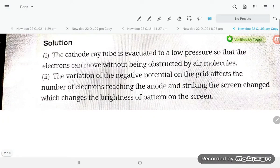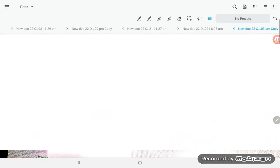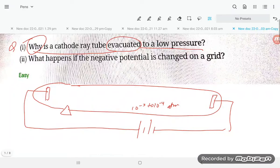The cathode ray tube is evacuated to low pressure so that the electrons can move without being obstructed by air molecules. This means the rays can pass very fast.